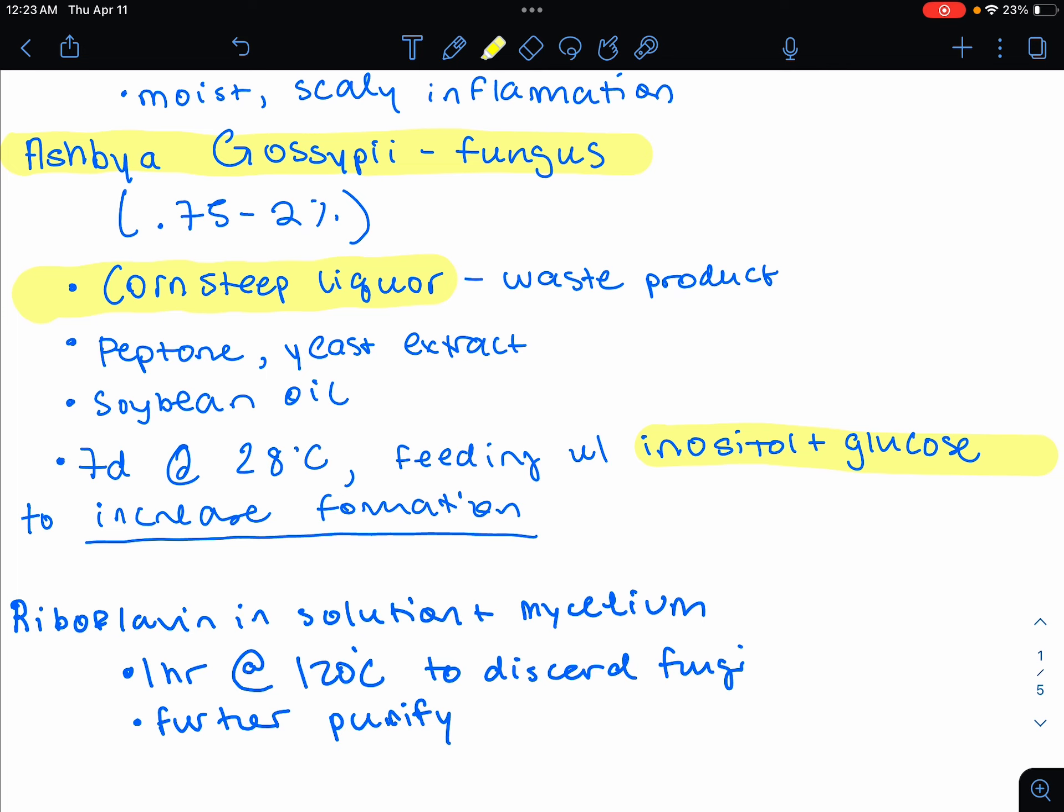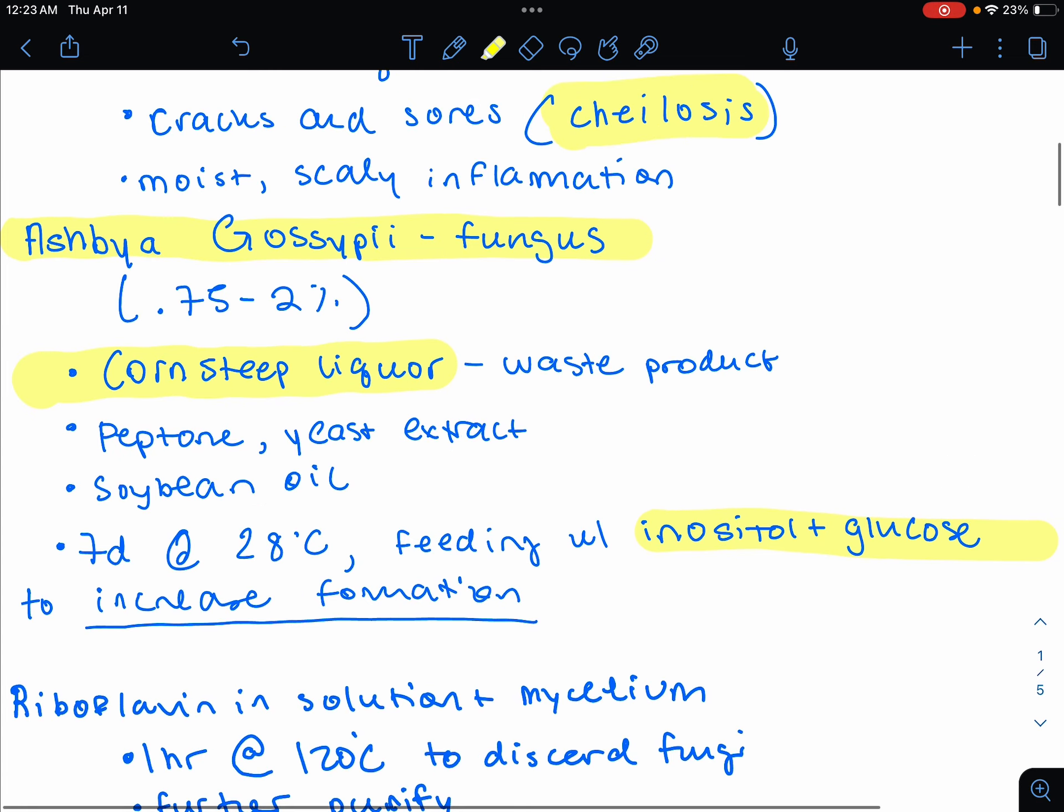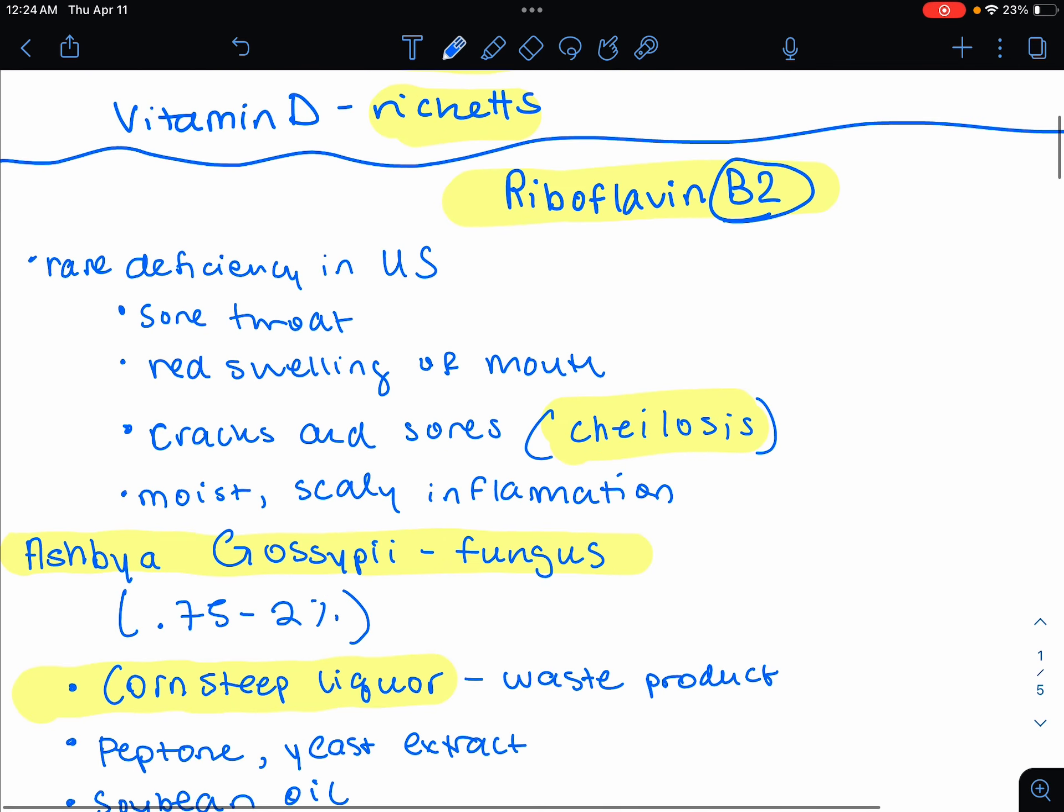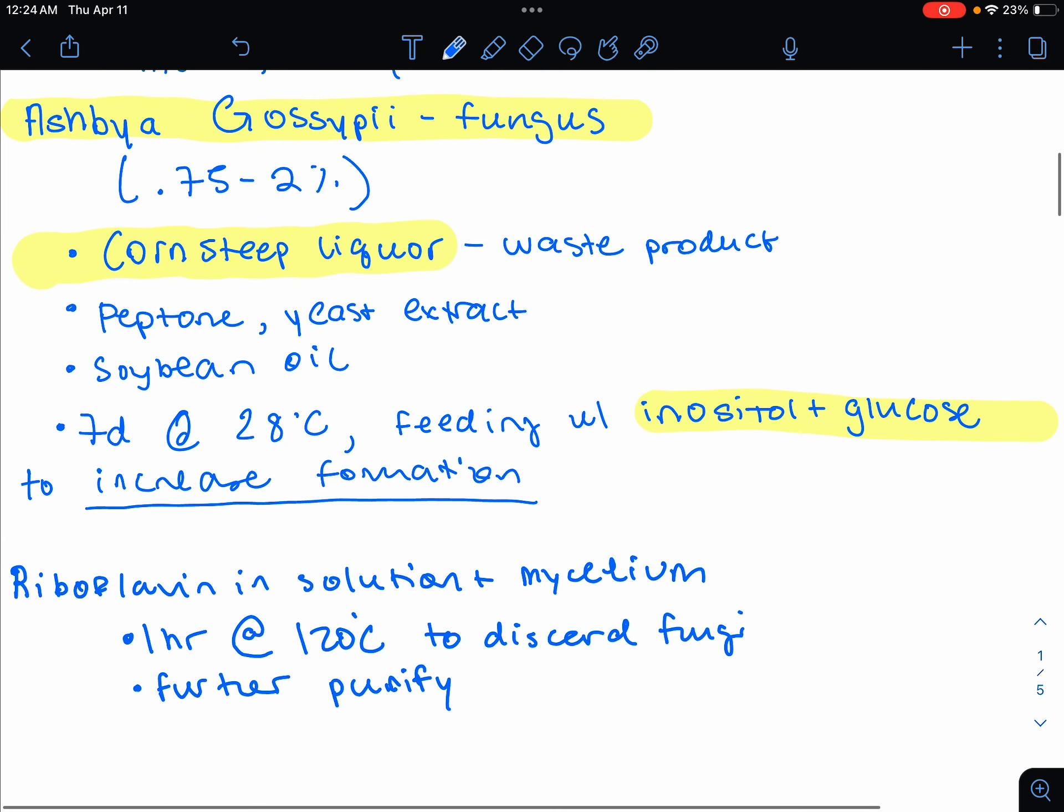How are we going to make riboflavin? This is going to be using this organism, Aspia gossipy. This is a fungi. And you need an inoculum of like 0.75 to 2%, but we don't really need to know that for this test, according to the professor. Just know Aspia gossipy is the fungus that's used for riboflavin, also known as vitamin B2.